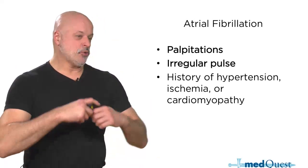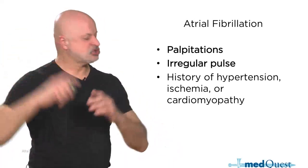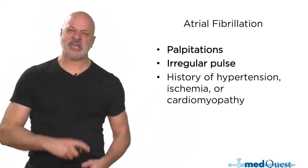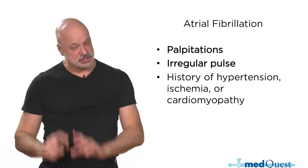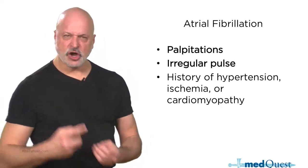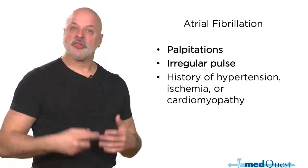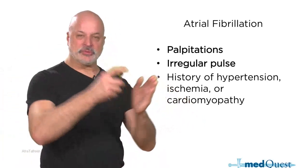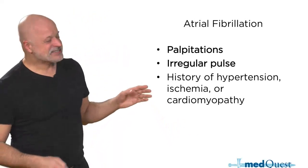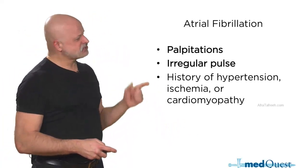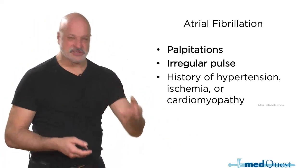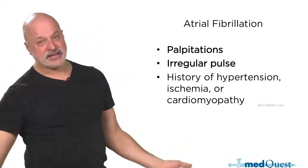Atrial fibrillation can happen with no history. You don't have to have hypertension, dilation, ischemia, or any anatomic abnormality — it can just happen. However, anatomic abnormalities of the heart make it much more likely. The more anatomically abnormal the atrium is, the more likely you are to have AFib. It's not exactly an ischemic rhythm, and not really from valvular disease, except that both ischemia and valvular disease can dilate the heart.